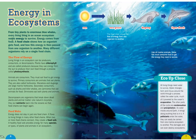Energy and ecosystems: from tiny plants to enormous blue whales, every living thing in an ocean ecosystem needs energy to survive. Energy comes from food. A food chain shows how an organism gets food and how this energy is passed from one organism to another. An example of a food chain: energy from the Sun helps grass grow; grass is eaten by a dugong, a herbivore; and the dugong in turn may be eaten by a tiger shark, a carnivore.